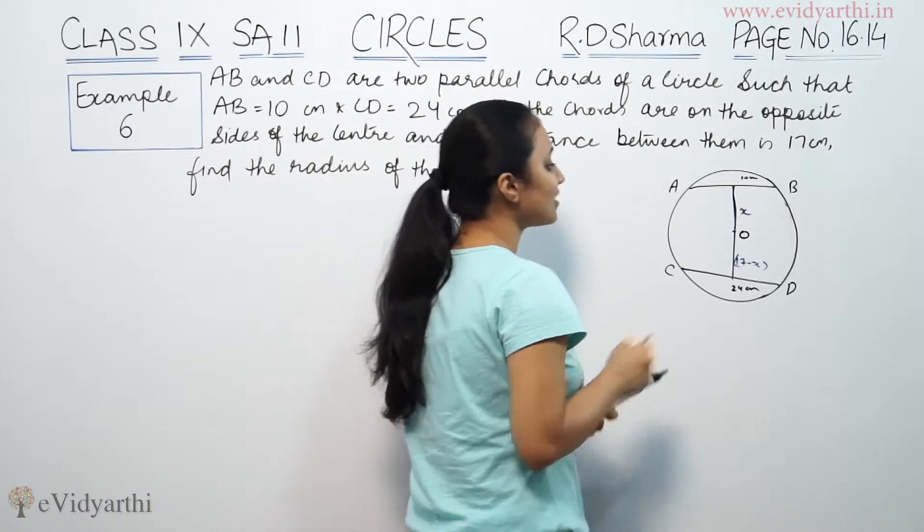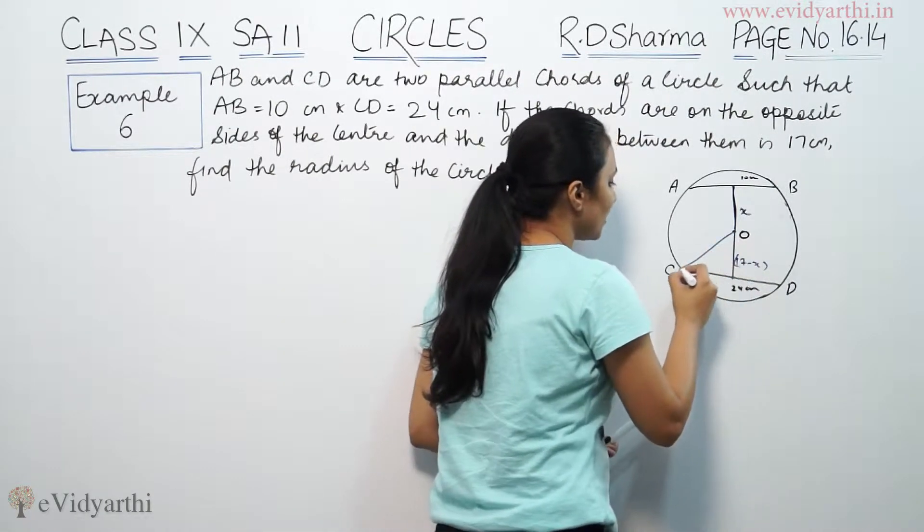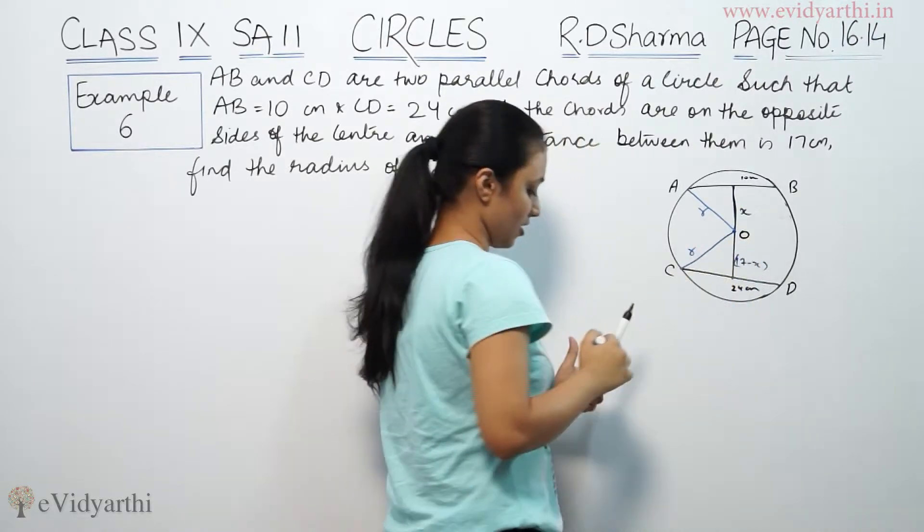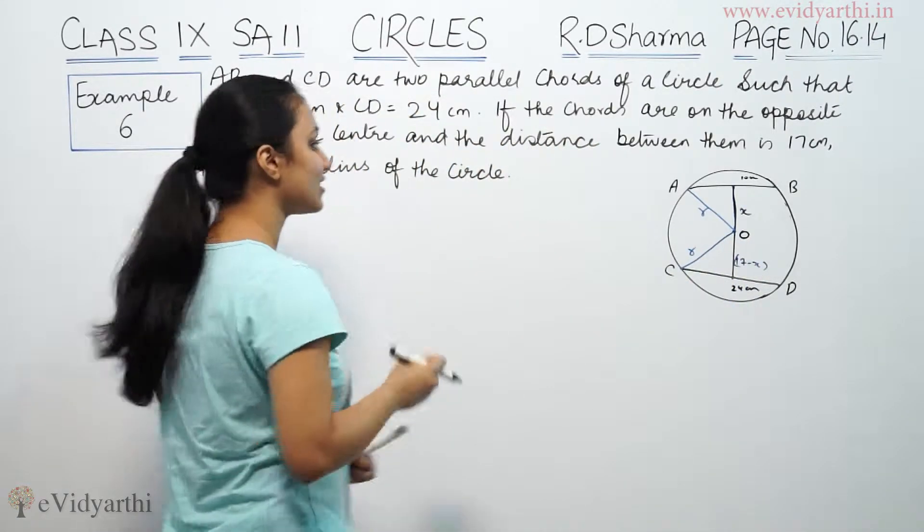Now, find the radius of the circle. So if we join this, let us let it be r. So now we have to find radius of circle.